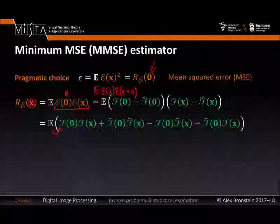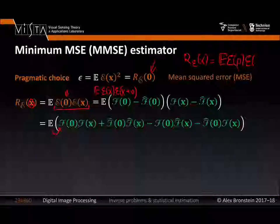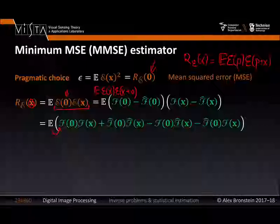For a wide-sense stationary process, the autocorrelation function can be written as the expectation of E at point P times E at point P+x, and it doesn't matter which P we take because the function is shift invariant — it depends only on the difference of the arguments, not the absolute locations. This is what stationarity gives us. Working with second-order moments and translation equivariant systems is only meaningful if we assume wide-sense stationarity.